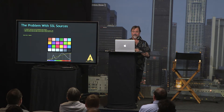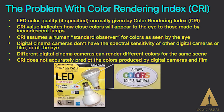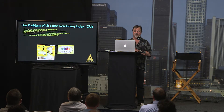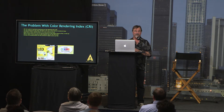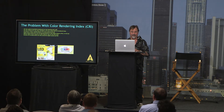In this case, the upper halves are tungsten light. CRI has proven very insufficient to quantifying LED lights. LED color quality, normally given by color rendering index, is just a very broad measurement. CRI value indicates how close colors will appear to the eye to those made by incandescent lamps in terms of Kelvin color temperature, and CRI assumes a human standard observer. Digital cinema cameras don't have the spectral sensitivity of other digital cameras or film or of the eye — they all see colors differently. Different digital cinema cameras can render different colors for the same scene. CRI does not accurately predict the colors produced by digital cameras and film.